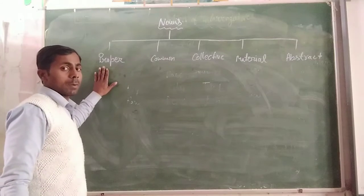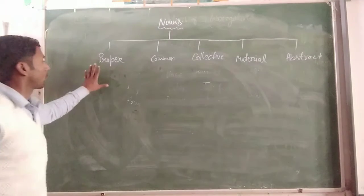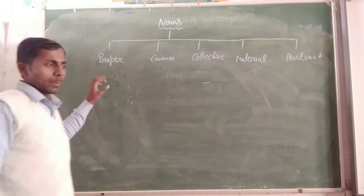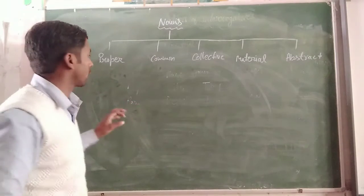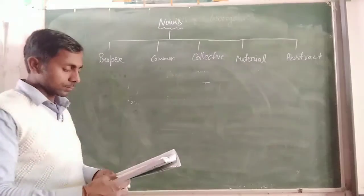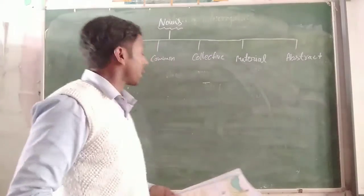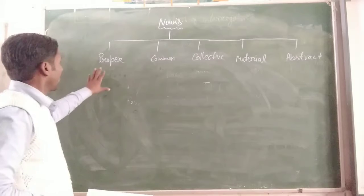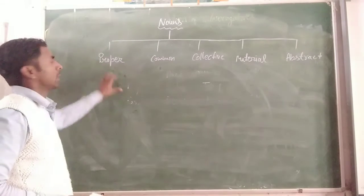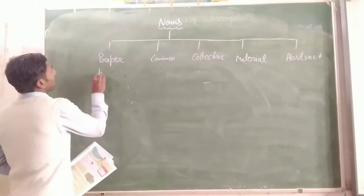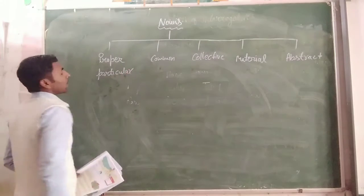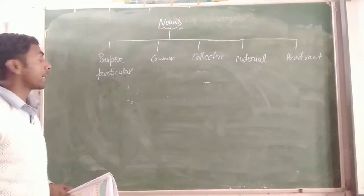First is proper noun. When we define it, according to the definition, a proper noun is the name of a particular person, place, animal, or thing. It is the name of a particular.